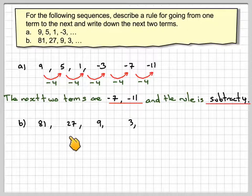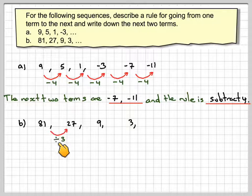B, 81, 27, 9 and 3. If we did 27 divided by 81, we would get 3. So what we're doing is we're actually dividing each term by 3.